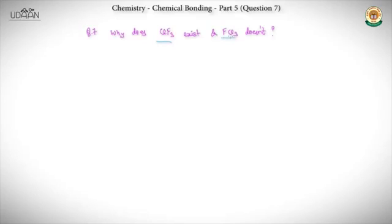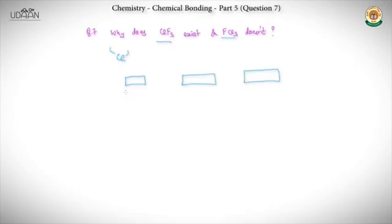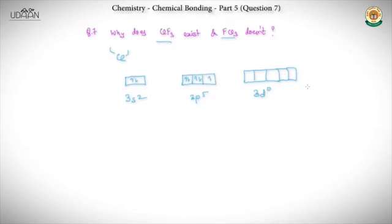In ClF₃, the central atom is Cl. The outermost shell electronic configuration of Cl is 3s²3p⁵3d⁰. You can see that Cl has vacant d-orbitals. This is the basic reason — as we understood in the first question — that when we provide some excitation energy, the electrons move. A compound should have empty d-orbitals so that whatever electrons are excited can be accommodated.